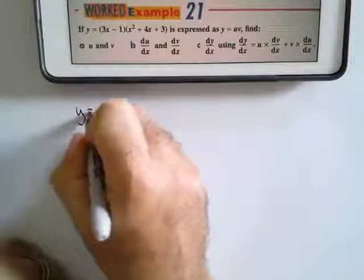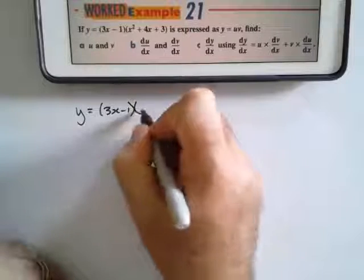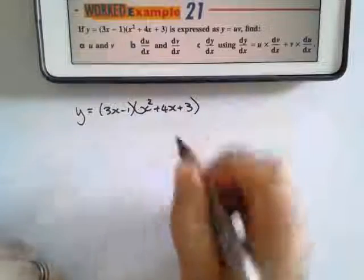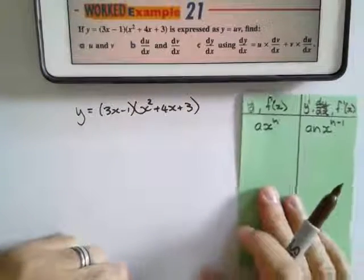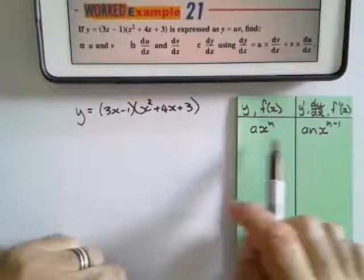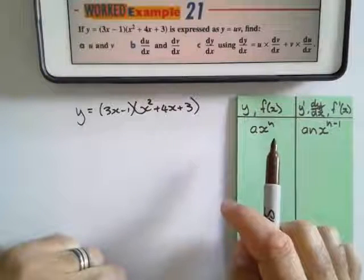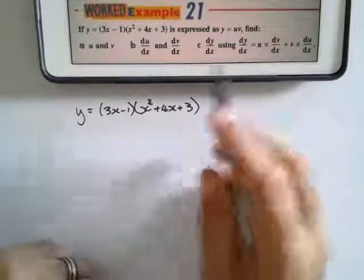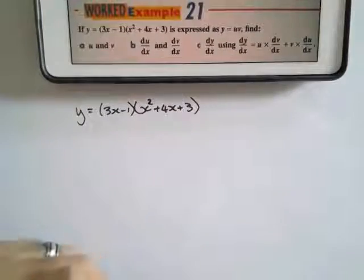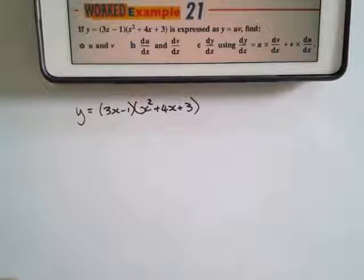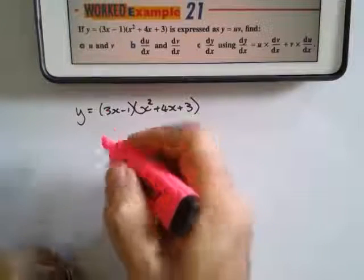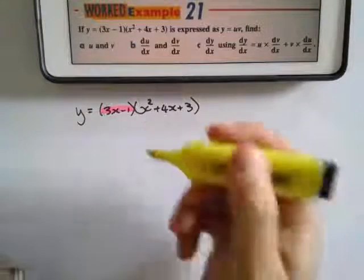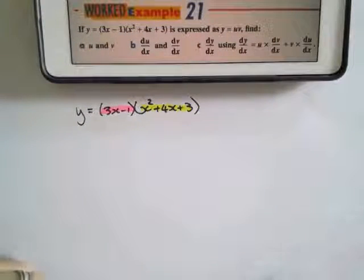I'm going to have y equals 3x minus 1 times x squared plus 4x plus 3. Now we can see that this doesn't look like the rule we can apply from year 11. We could have gotten rid of the bracket, but they say we have to use it as the form u and v. What I'm going to show you is that we have here a product—this bracket or this function multiplied by this function. So we've got two functions that we multiply with each other.